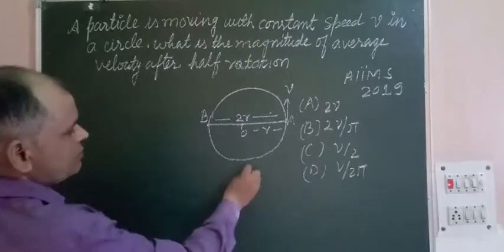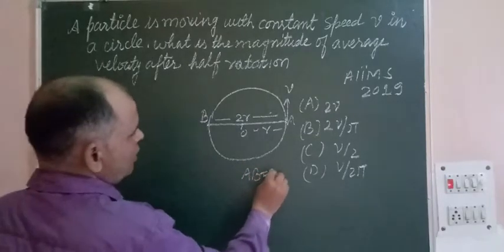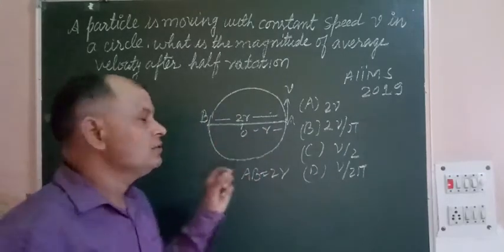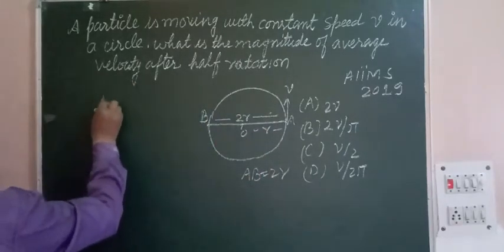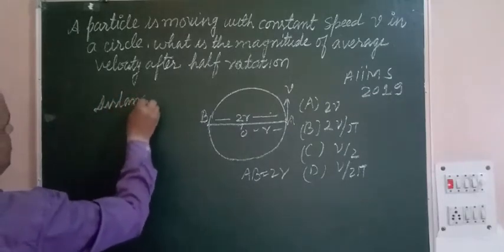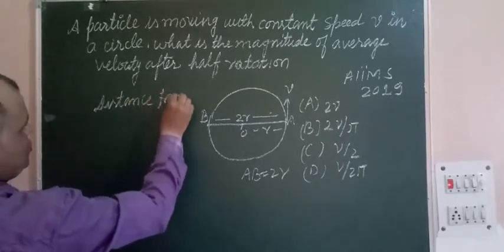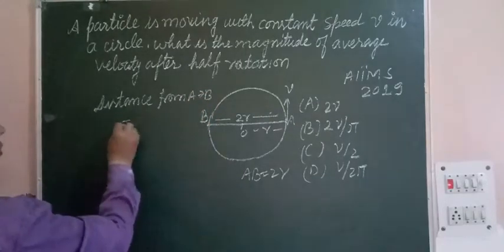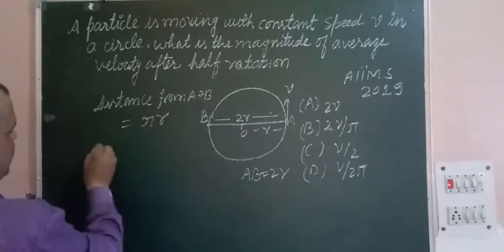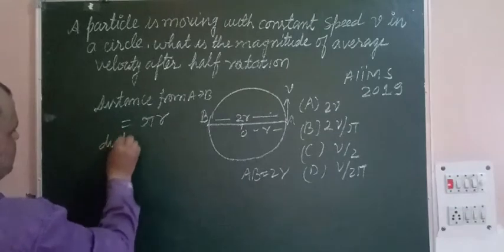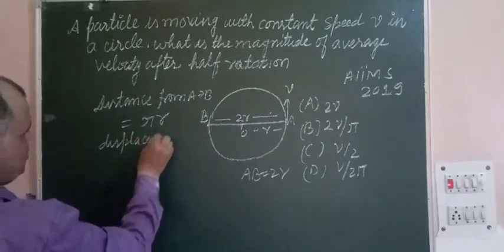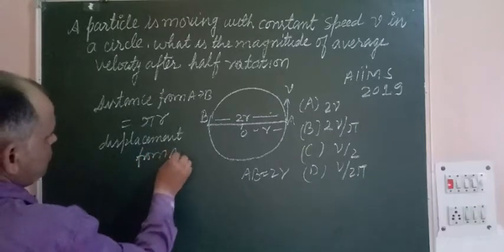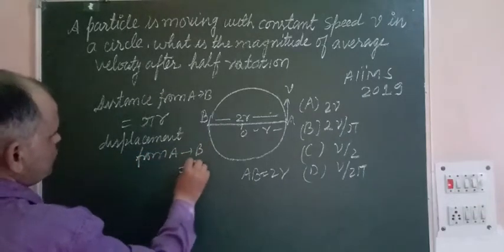AB is 2R and this curved path which is half circumference, so distance from A to B we have taken as πR.